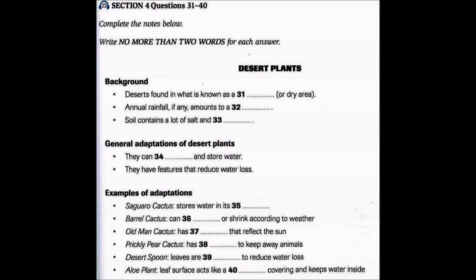Finally we come to the aloe plant, which many people keep in their homes. It's an attractive plant with leaves that look and feel rather waxy. This surface behaves like a plastic wrapper and helps the plant hold water in. It's a wonder plant — its juice has been used as a medicine for centuries, and even today you can find it in products on the pharmacist's shelves or in creams and lotions.